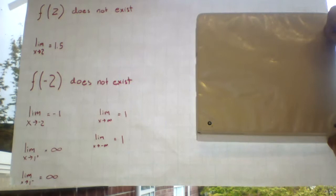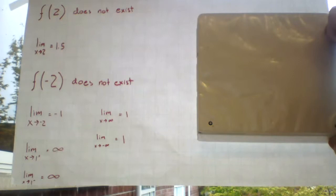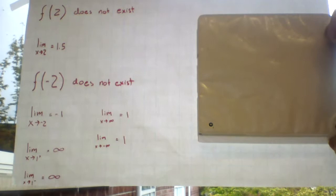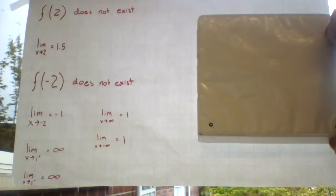So furthermore, we know that the limit as x approaches 1 from the positive side equals infinity, while the limit as x approaches 1 from the negative side also equals infinity. The limit as x approaches infinity equals 1, and the limit as x approaches negative infinity equals 1.